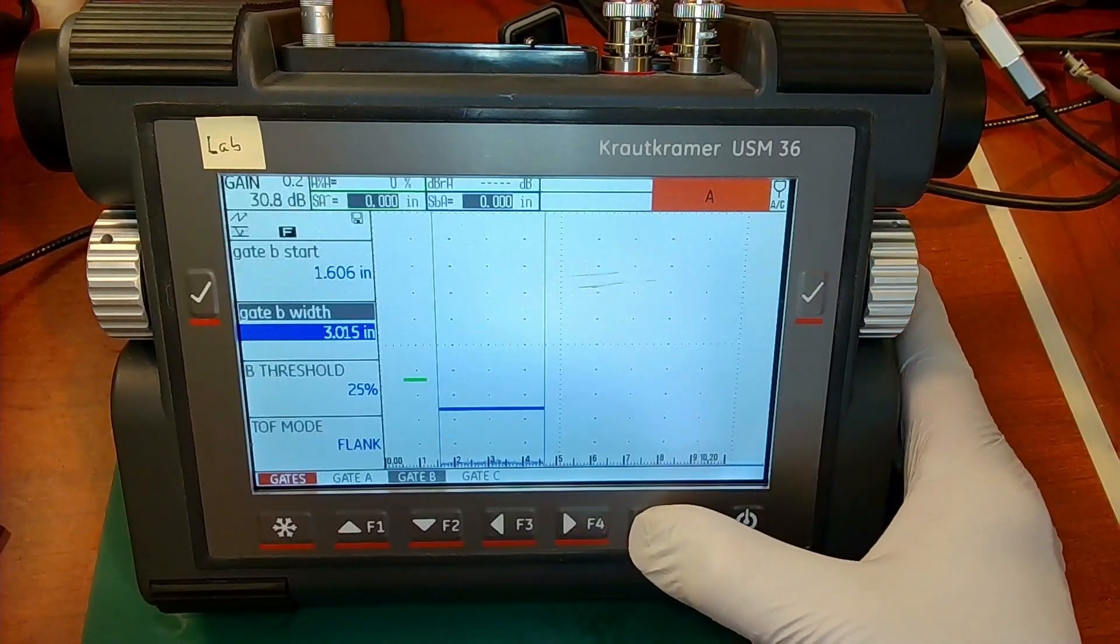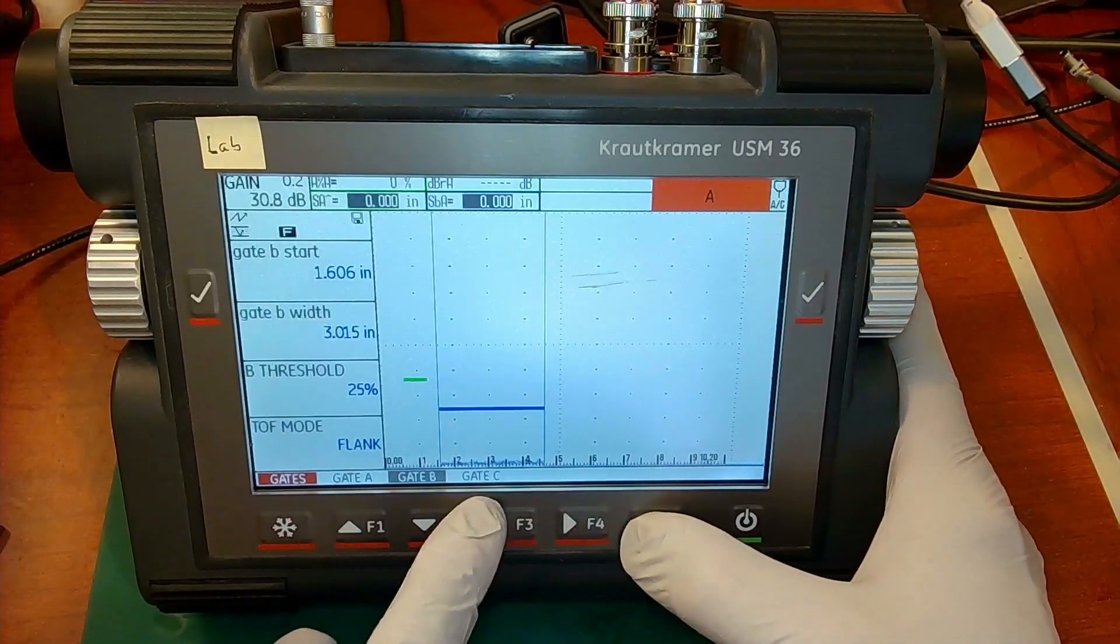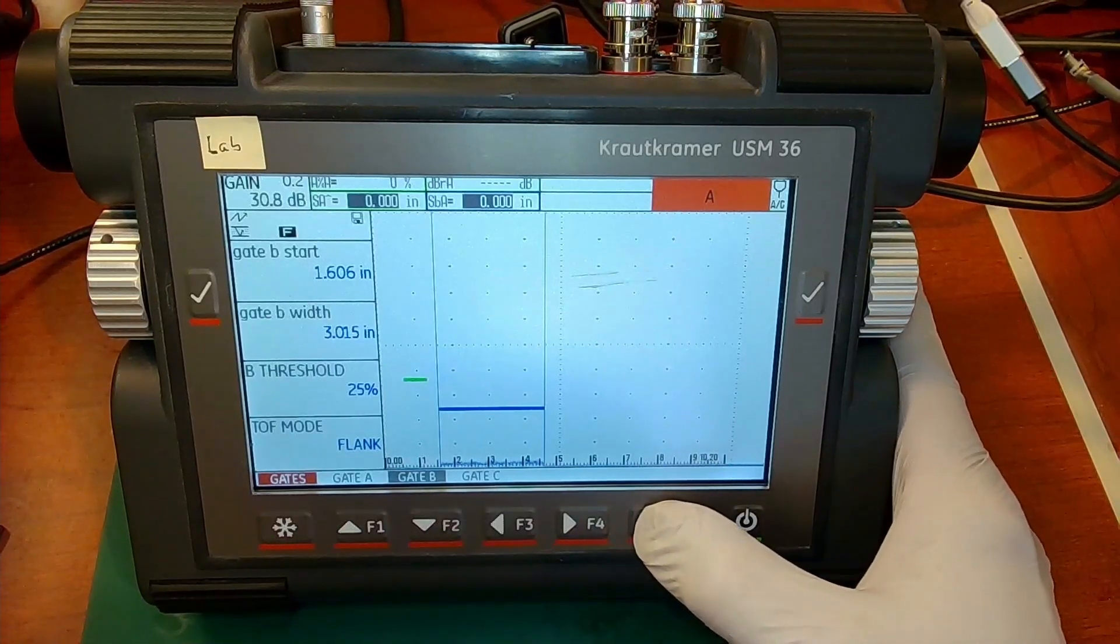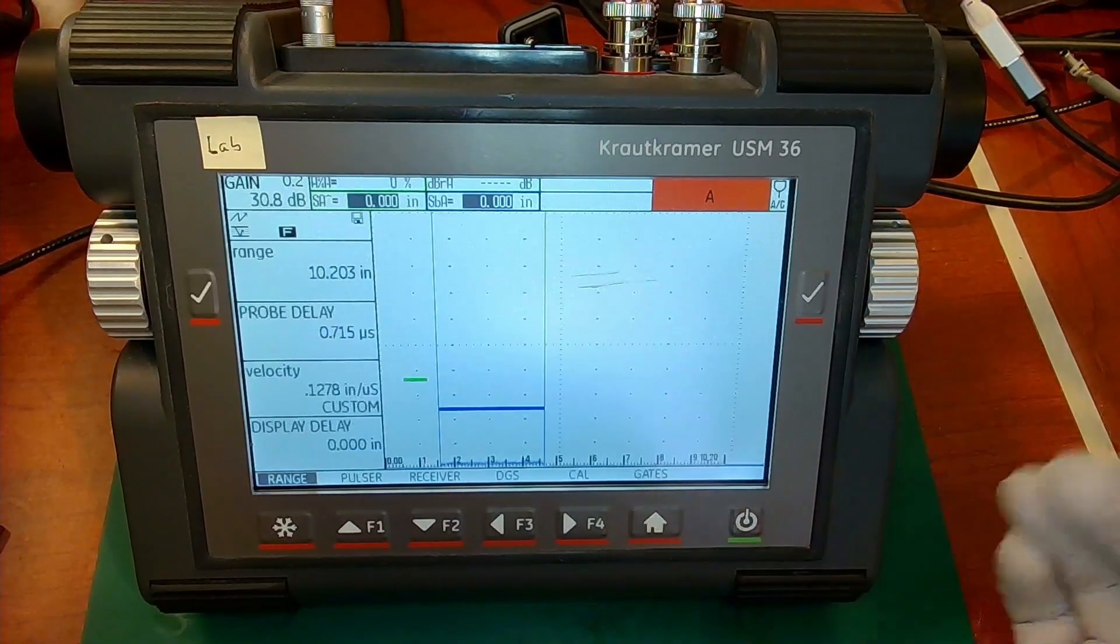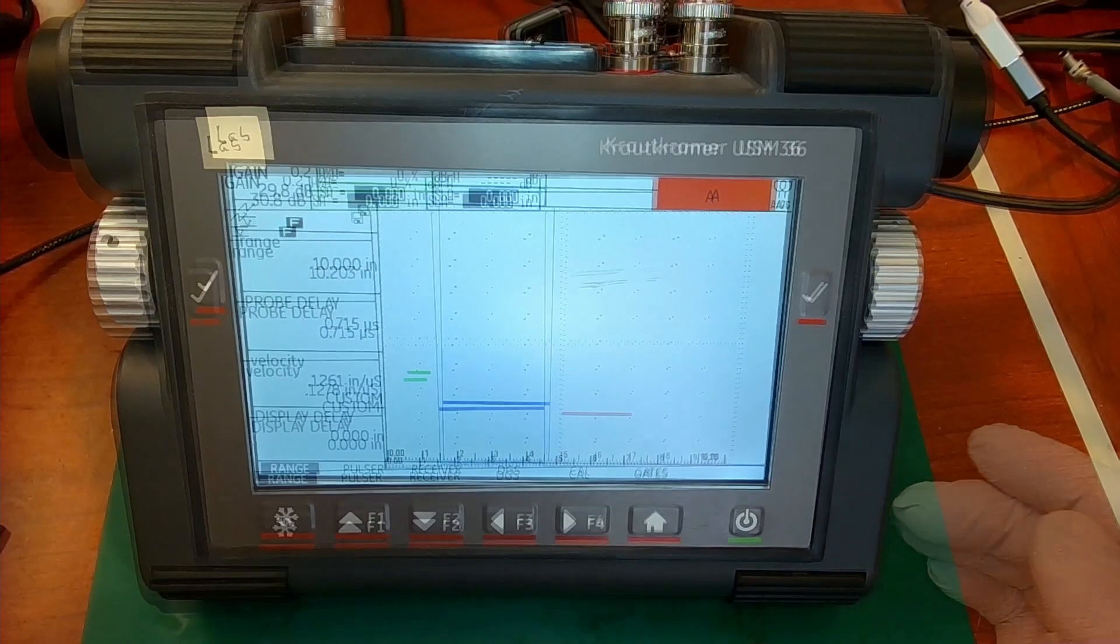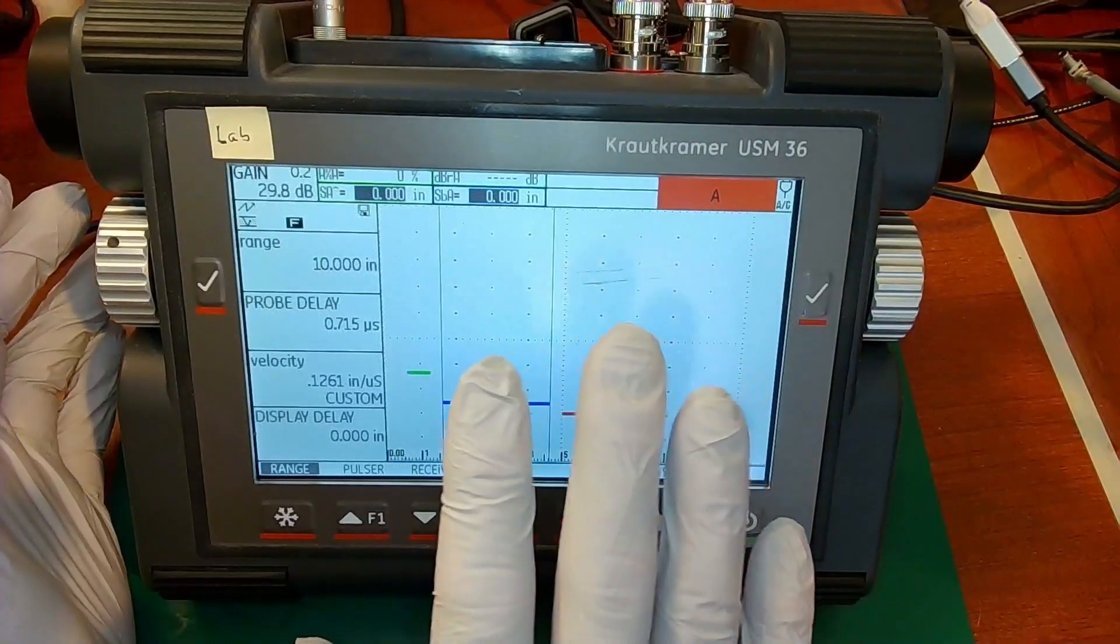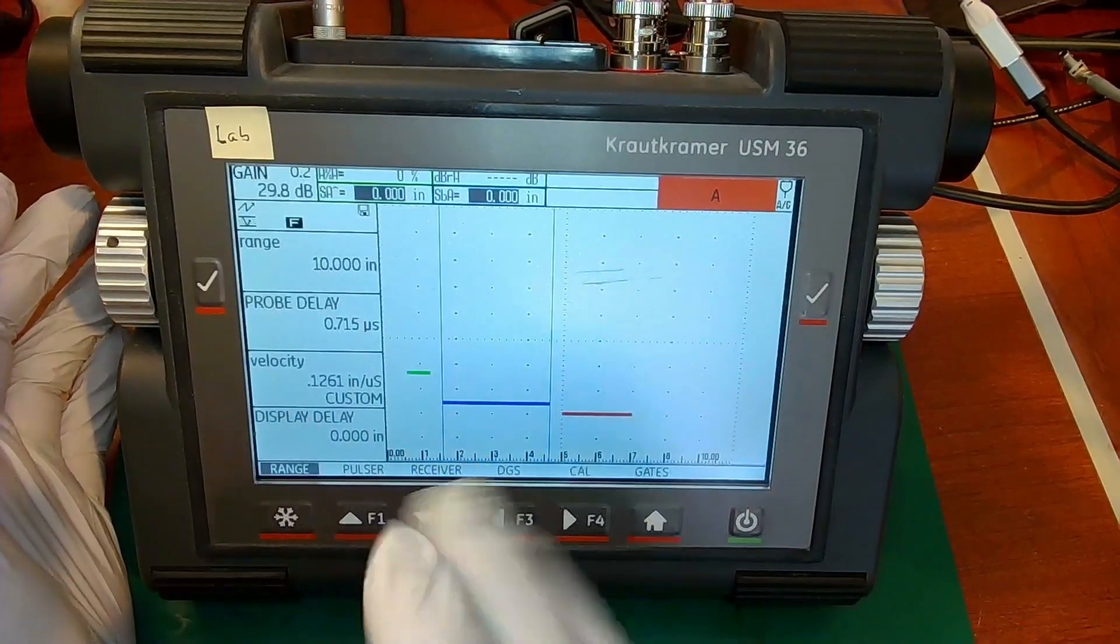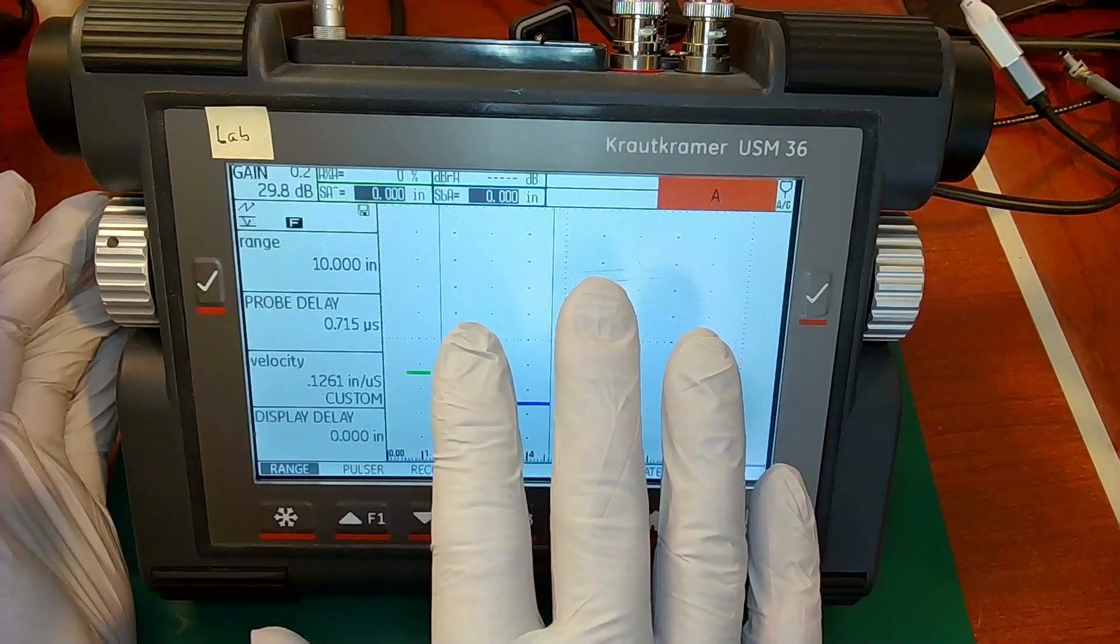Now, if I press home, it'll take me back to the gate ABC selection. If I press home again, it takes me back out to the front. Now the instrument is in the ultrasonic display mode. You're out front and you can see the A-scan.